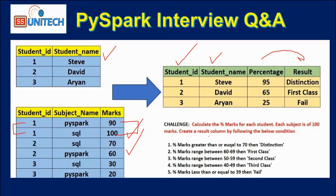How can we get the result? For the result we are having certain conditions. If the percentage marks is greater than or equal to 70, that will be distinction. If the marks are between 60 and 69, that will be first class. If the marks are between 50 and 59, that will be second class. If the marks are 40 to 49, that will be third class. And if the percentage is less than 39, that student will fail.